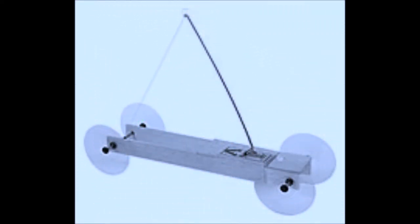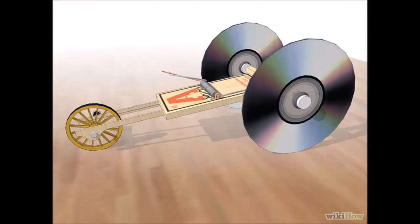You may be wondering, what is a mousetrap race car? Well, it is a vehicle that is powered by the energy of a mousetrap. The snapper arm of the mousetrap is typically extended and attached to a long string, which is wrapped around an axle and used to start to get the car in motion.